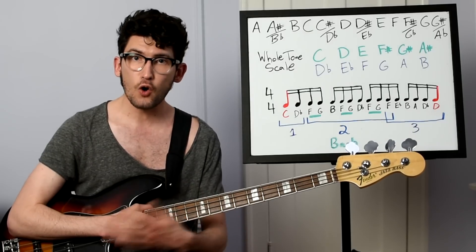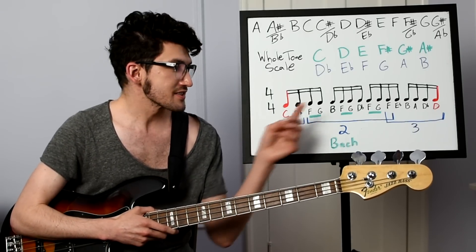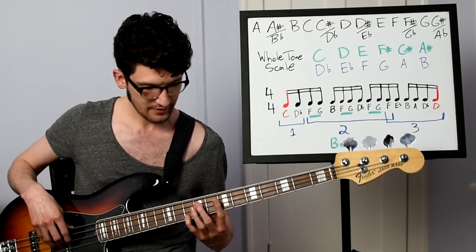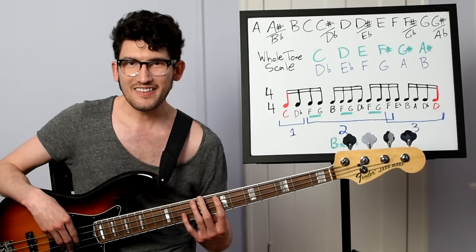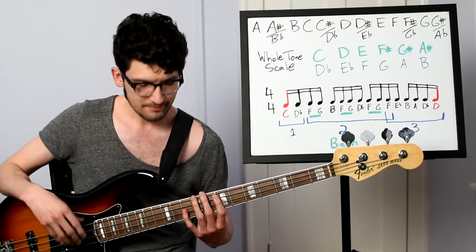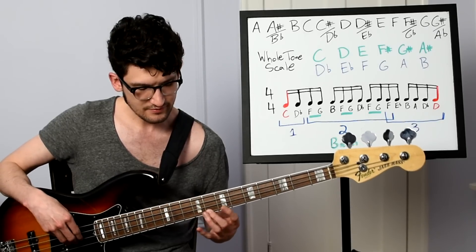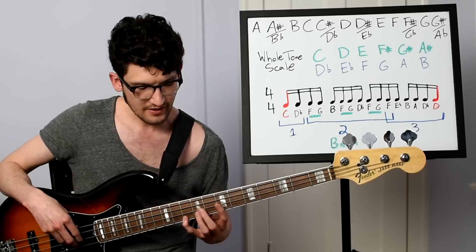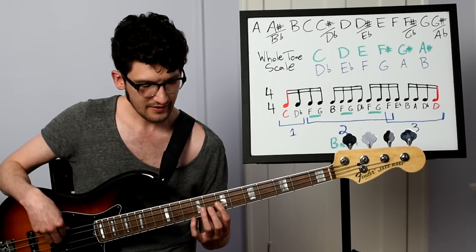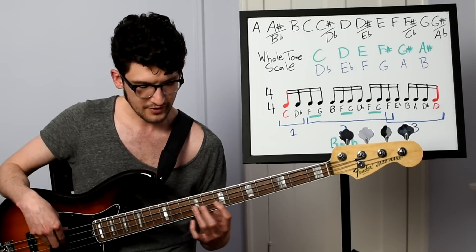The third section overlaps with the second section. That is, the third section starts on the F that the second section ends on. So we start up here on the F. And this I kind of like to think of as a finger twister. It's just a shape that we don't commonly play. So F to E-flat with my pinky to my second finger.